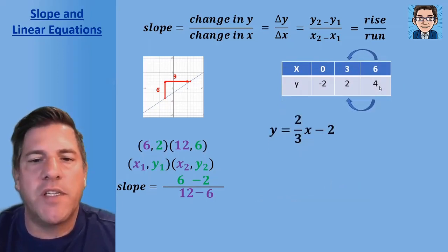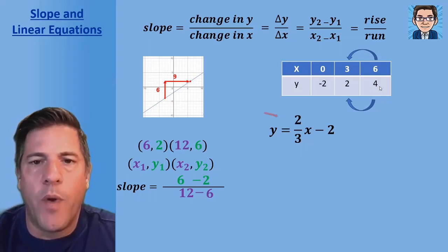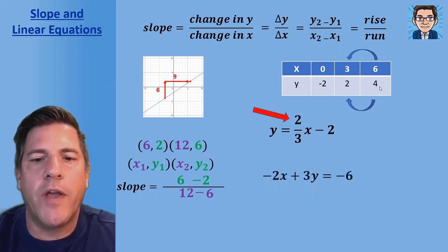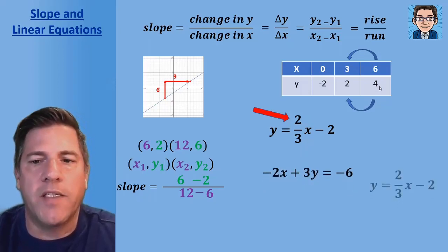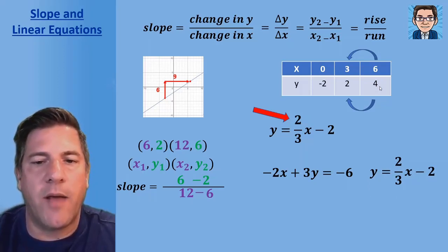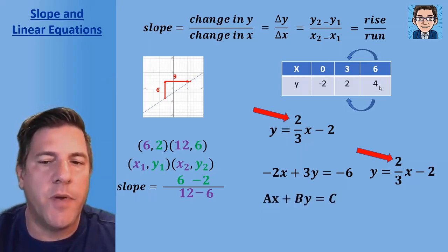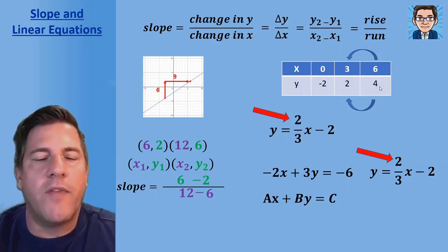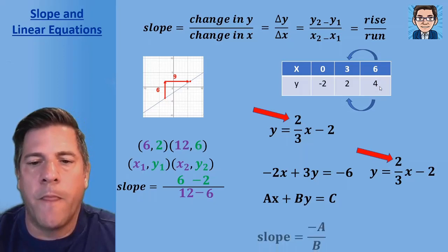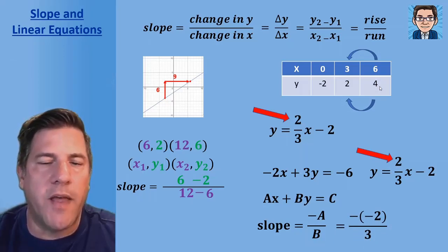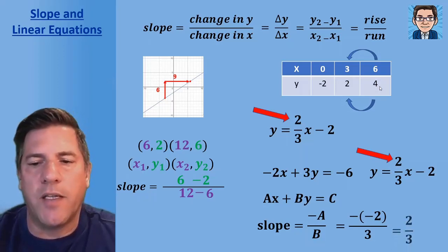For an equation solved for y — slope-intercept form — we just pick the number being multiplied by x, and that's our slope: two over three. If the equation is not solved for y, we can either solve it for y, or use standard form ax + by = c. In standard form, the slope is negative a over b. So for negative two x, the slope is negative negative two over three, which equals positive two over three.